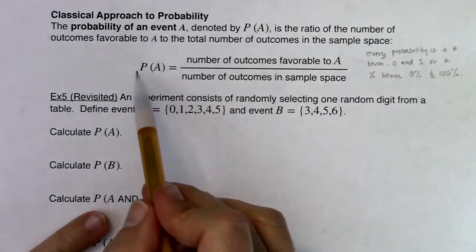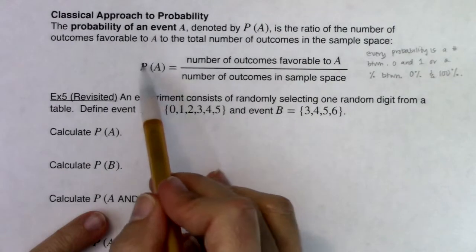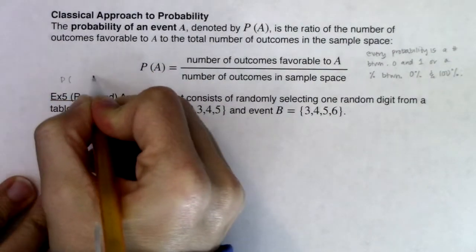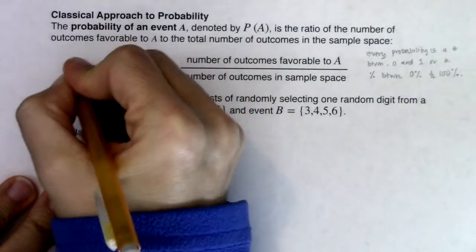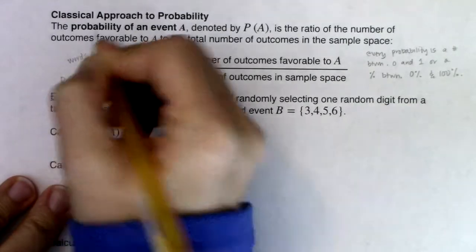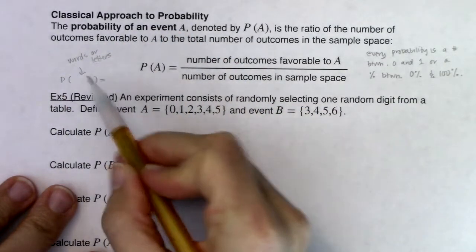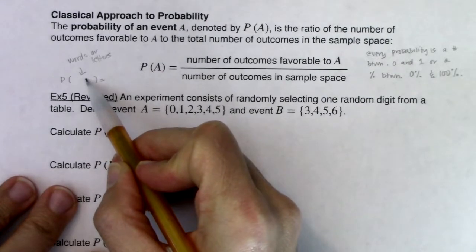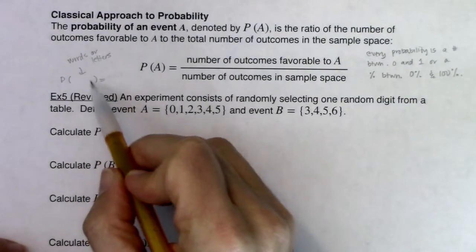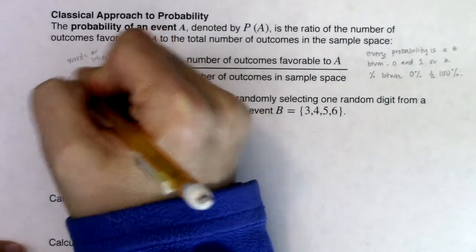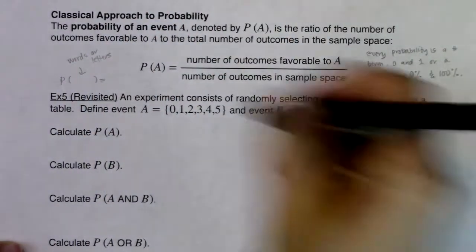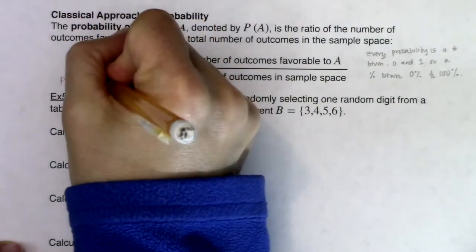I'm going to be a stickler for notation. When it comes to a probability, you will have a capital P with parentheses — always capital P, some parentheses, and then an equal sign. In the parentheses you will have words or letters, like event A or 'number of females in an applicant pool.' Immediately to the right of that equal sign is your number between zero and one.